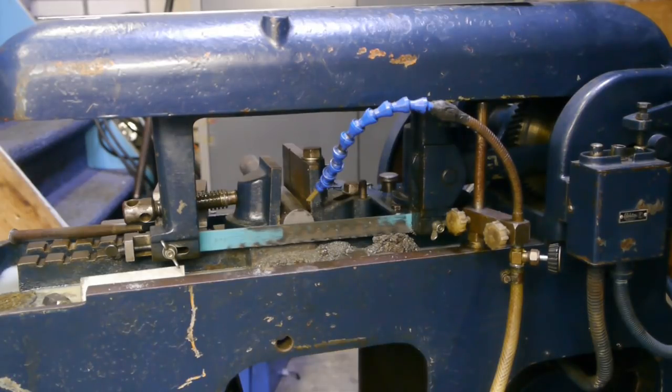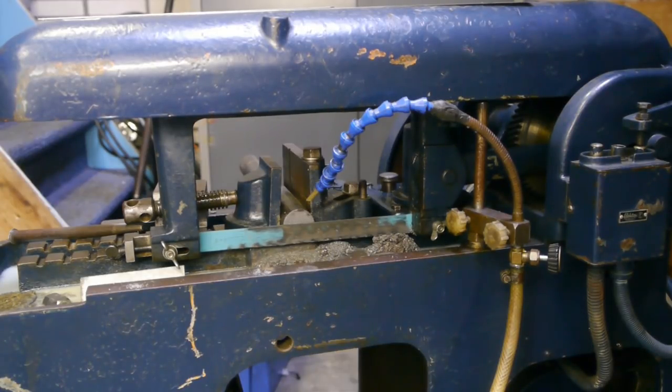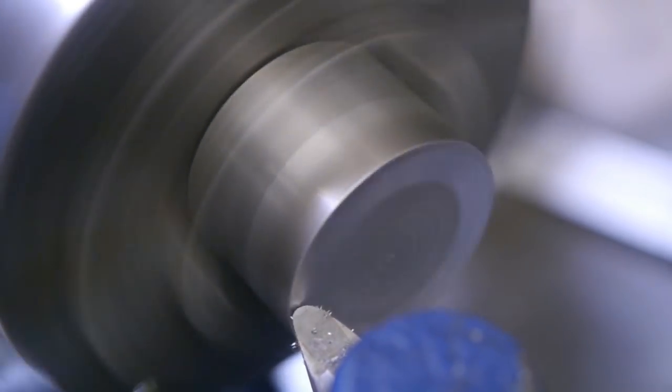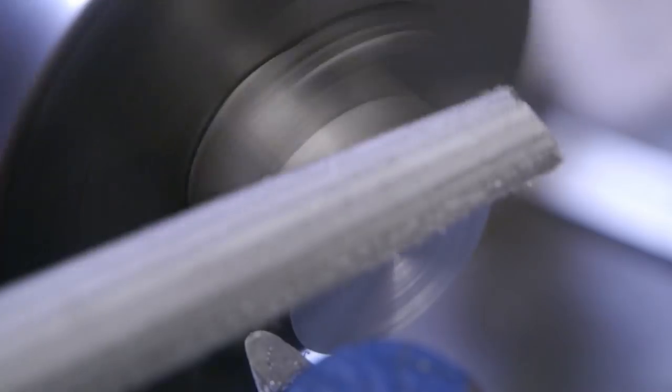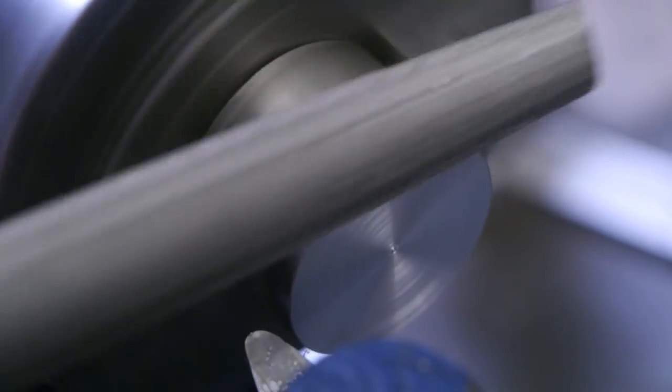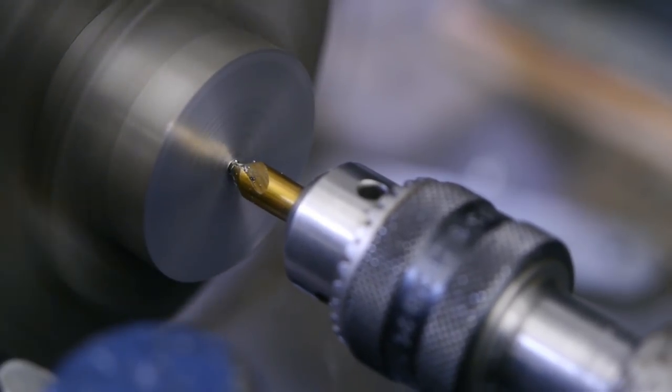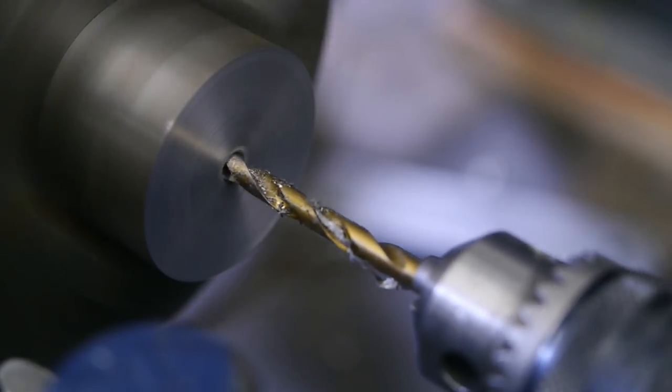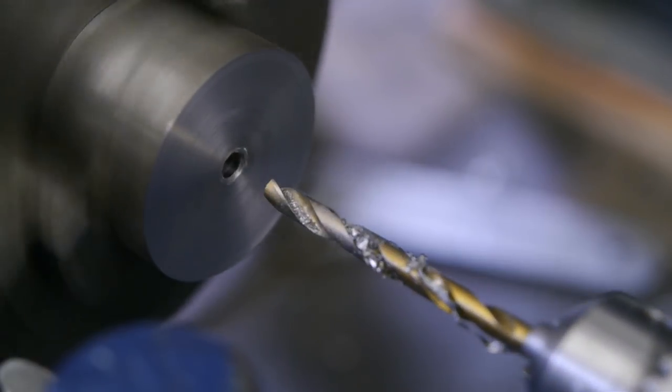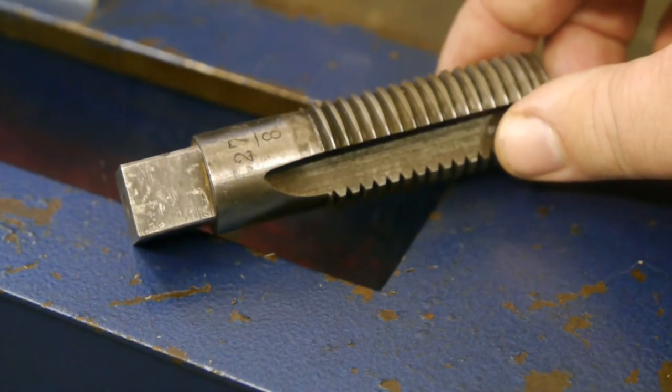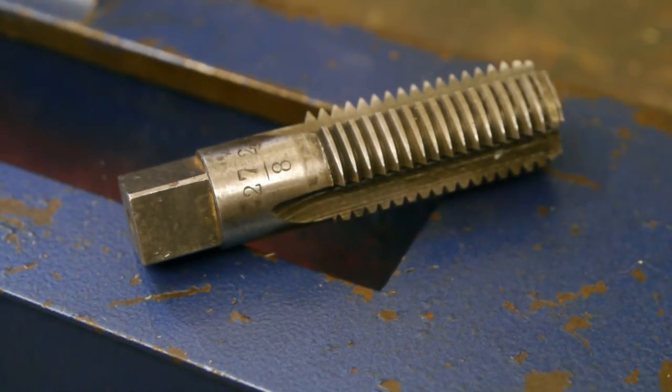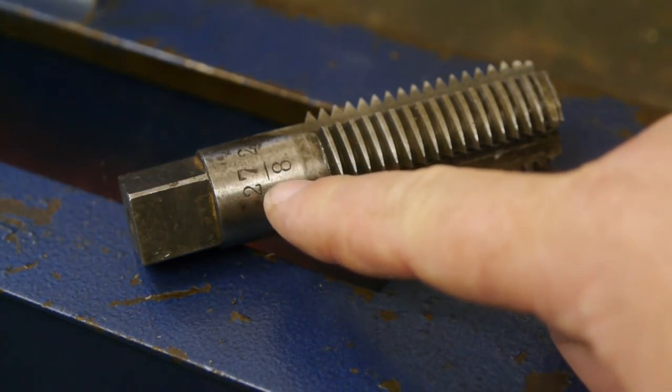I've tried making an 8 TPI thread before using this big tap, but I wasn't strong enough to tap through a piece of steel. So this old tap is only useful for showing me that I need to drill a 7/8 hole.